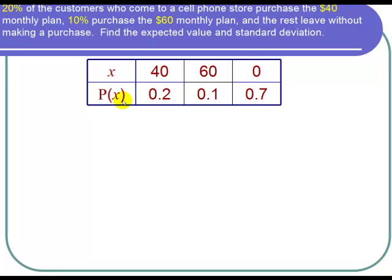The probabilities for those: 20% purchase the $40 plan, so that's 0.2 for the $40 plan. 10% for the $60 plan, so that's 0.1 for the $60 plan. That totals up to 30% and what's left is 70% didn't purchase anything, and that zero corresponds to 70%. So now I'm going to enter this into my TI-84 calculator.